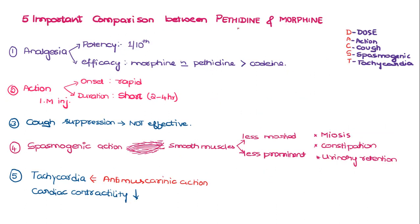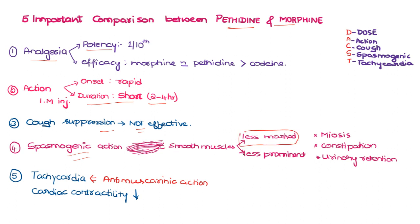There are five important comparisons between pethidine and morphine. Compared to morphine, pethidine's potency is 1/10th that of morphine, and efficacy is in between morphine and codeine — more than codeine but almost equal to morphine. After IM injection, the onset of action is rapid but duration of action is shorter, lasting two to four hours. The cough suppressant action is not as effective as morphine.